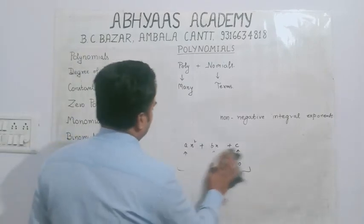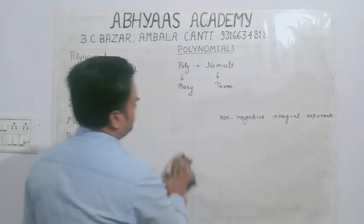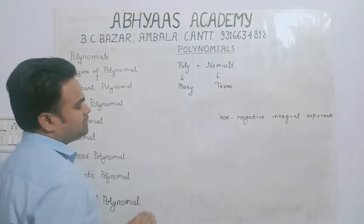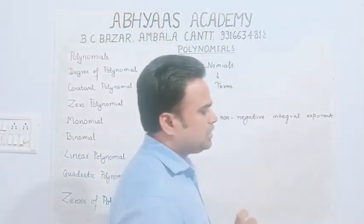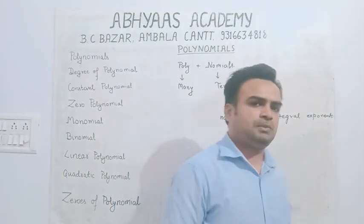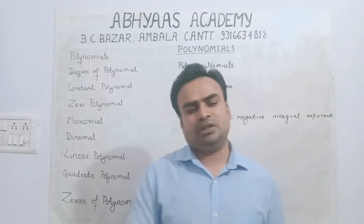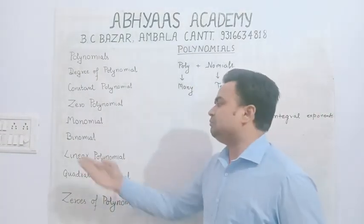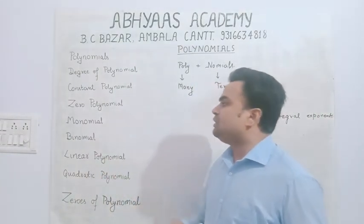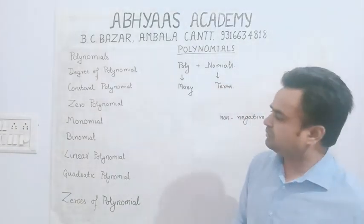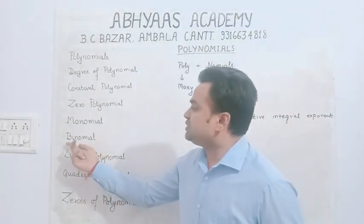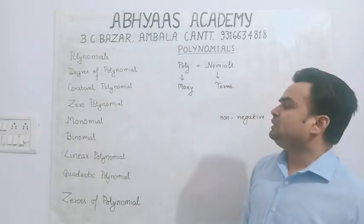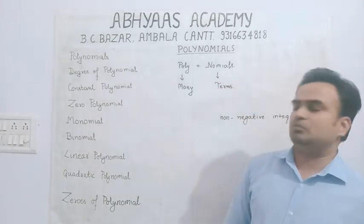Next topic is monomial। Mono means single, nominal means terms। तो कोई ऐसी algebraic expression जिसमें केवल एक term है, उसको हम monomial बोलते हैं। Binomial — bi means two, nominal means terms। तो कोई expression जिसमें 2 terms हैं, उसको हम binomial बोलेंगे।